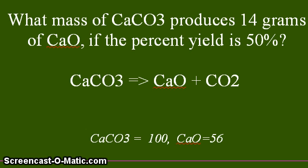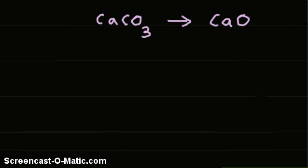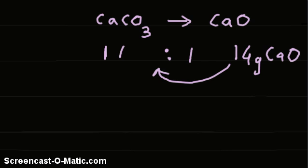Therefore, the ratio is 1 to 1. Now, since we have 14 grams of calcium oxide, we cannot use 14 grams directly. That is not correct. First, we have to convert this to moles.